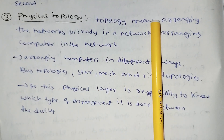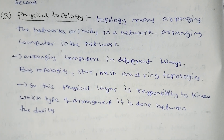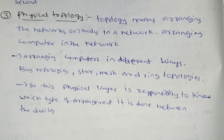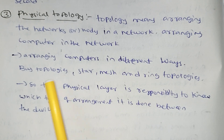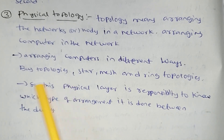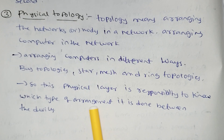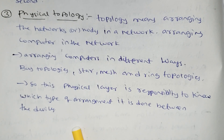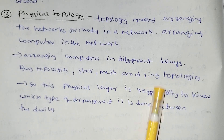The next function is physical topology. Topology means arranging the network nodes or computers in a network. Devices like routers are arranged in different ways. Topologies include bus topology, ring topology, and star topology. The physical layer is responsible for knowing which type of arrangement is done between devices.